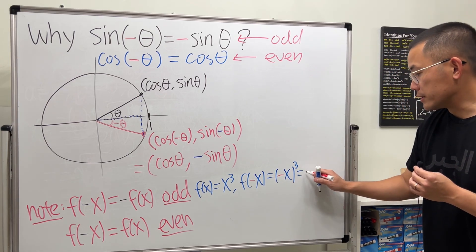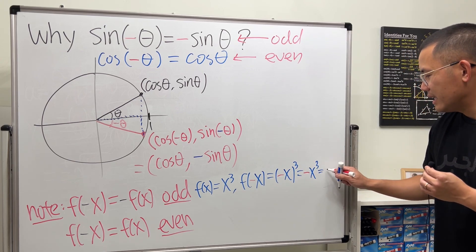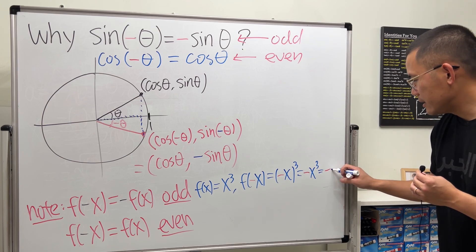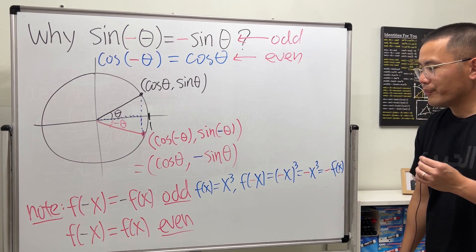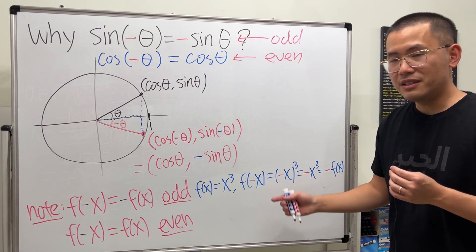and then to the third power. Negative 1 to the third power is still negative, and x to the third power. Well, this is the negative on the outside, and then we get back the original. So as you can see, when you have odd power, this right here will be like this. So it makes perfect sense.